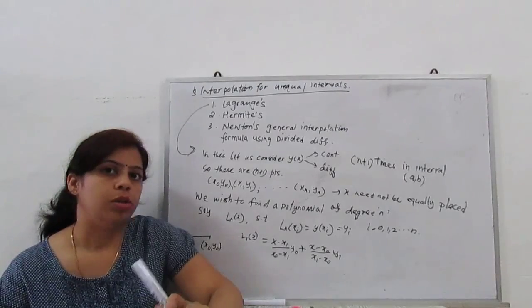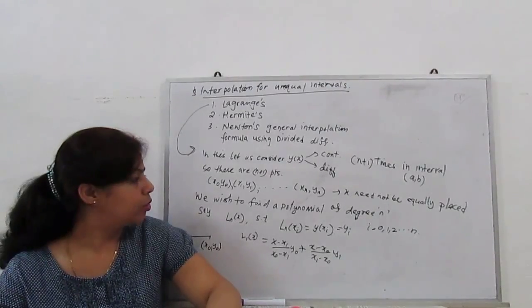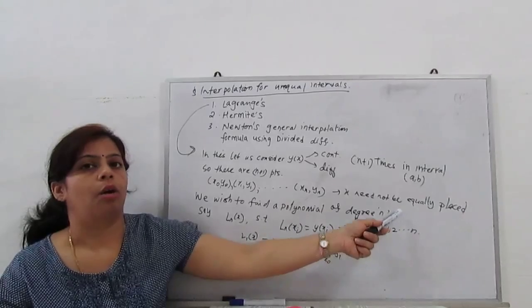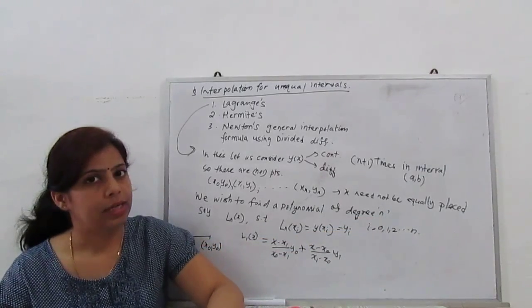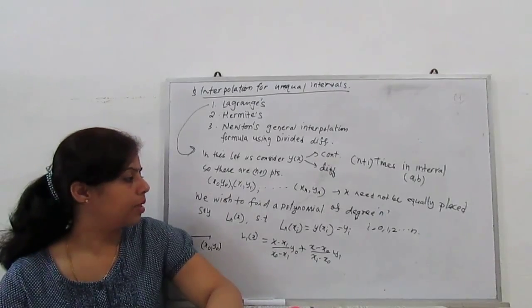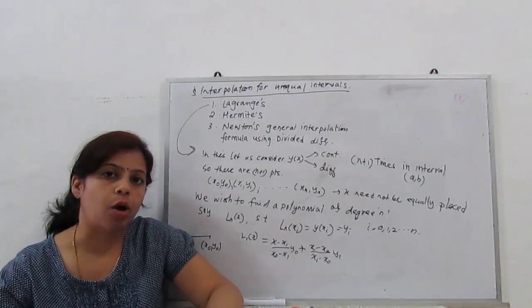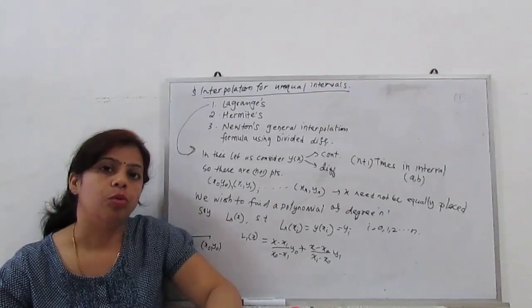Then how to derive the formula? We wish to find a polynomial of degree n. For degree n, we start with the very basic equation of straight line.